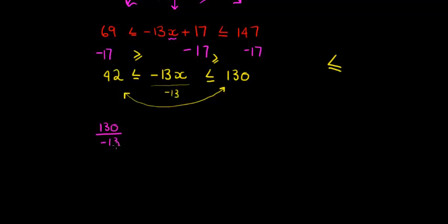So I'll say 130 divided by negative 13 is smaller than or equal to, on this side obviously it cancels, x is smaller than or equal to 42 divided by negative 13.